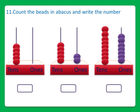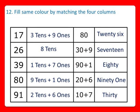That is question number 12. Here you have to fill the same color by matching the four columns. Dear students, the first number is 17 — that is 1 ten's and 7 ones. You have to color 1 ten's and 7 ones. In the third column, expanded form: 10 plus 7, that is 17. And in the fourth column, 17 in words. So you have to color the number 17 in different forms.